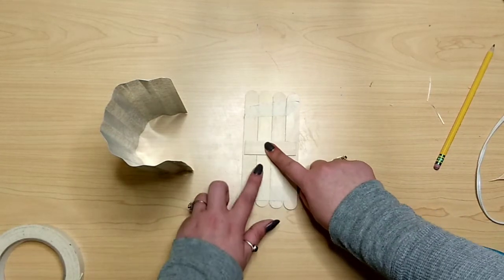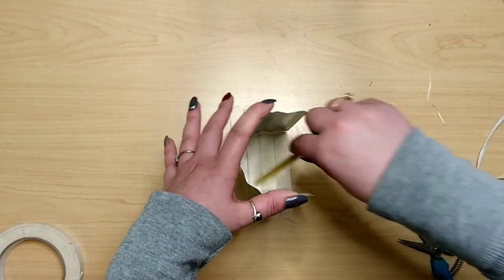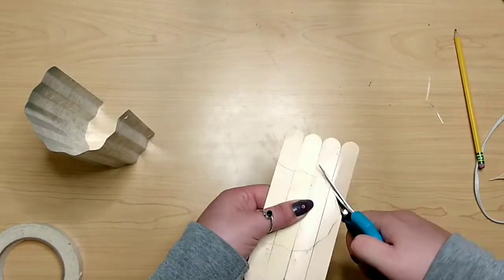Then we'll flip it over, set our metal piece on top of it and trace the inside shape of our vase with a pencil. Cut this out. It doesn't have to be perfect.